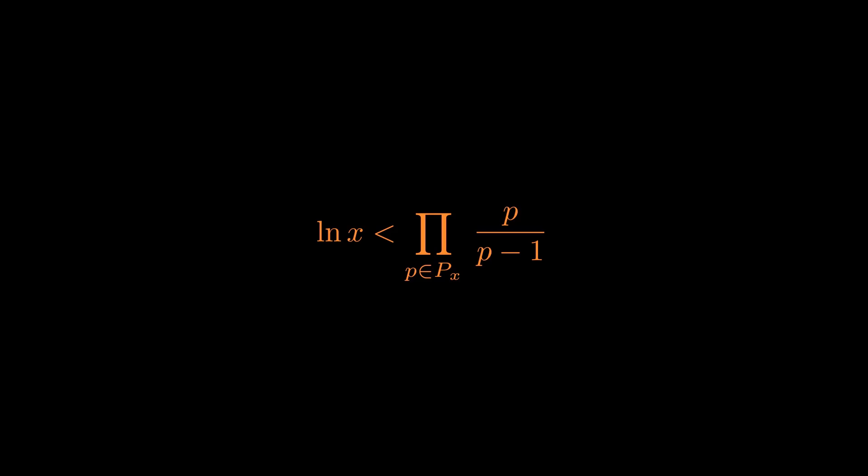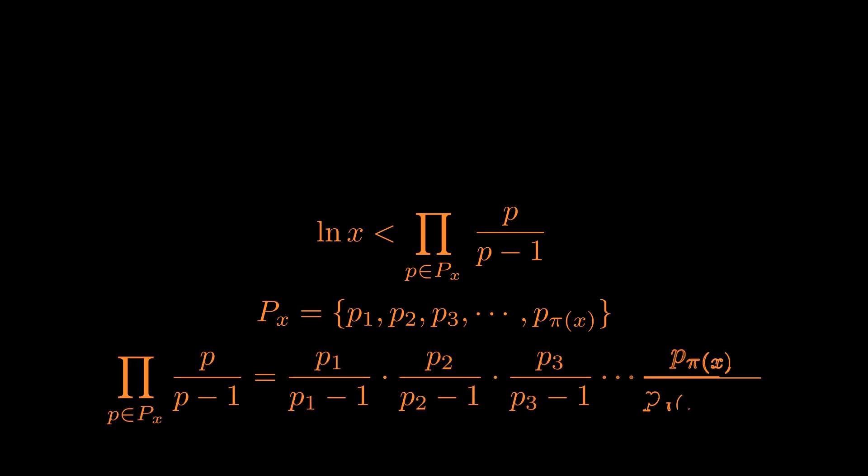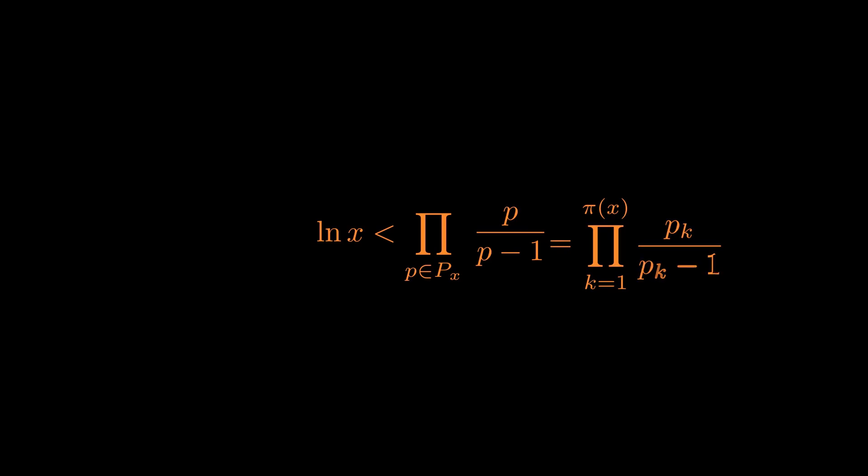Now if we write the elements of P subscript x as p1, p2, p3 up to p subscript π(x), then we can expand that product as p1 over (p1 minus 1) times p2 over (p2 minus 1) up to p subscript π(x) over (p subscript π(x) minus 1), implying that we can write our product as a product of p subscript k over (p subscript k minus 1) from k equal to 1 to π(x).